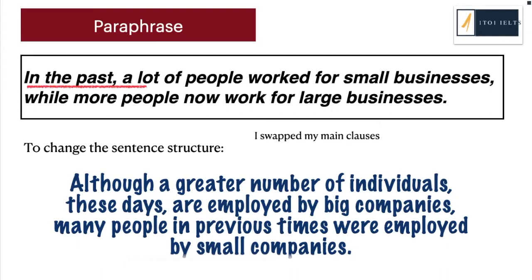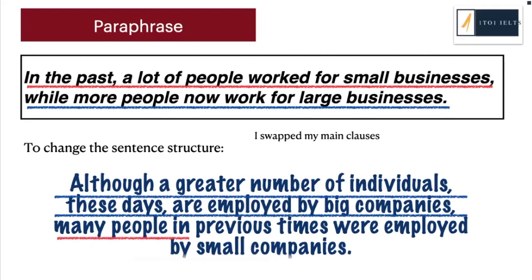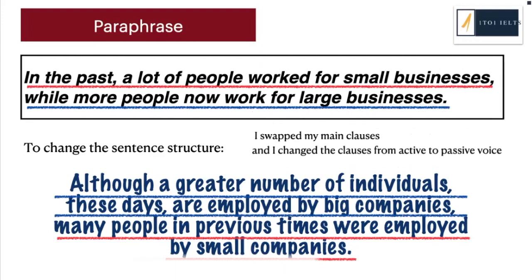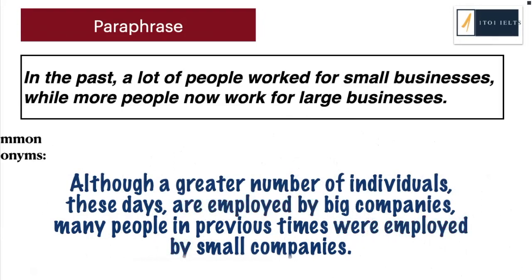I swapped the main clauses — the first clause is underlined in red and the second clause in blue. In the paraphrase, the blue part is now first and the red part is second. Not only did I swap the clauses, but I also changed them from active to passive voice, so you see I'm using 'are employed by' or 'were employed by.' After changing the sentence structure, I looked for easy synonyms — words that I was sure were direct synonyms of the original words.